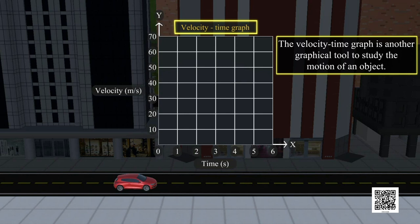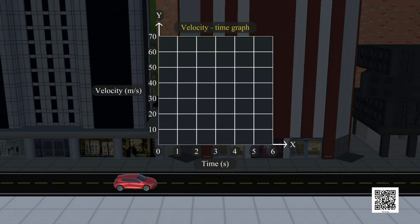to study the motion of an object. Here in this activity, with the help of the velocity-time graph, we will look into the variation in velocity with time for an object moving in a straight line.